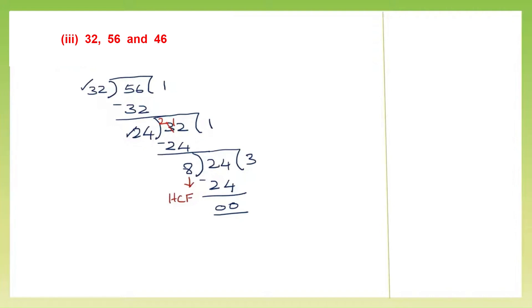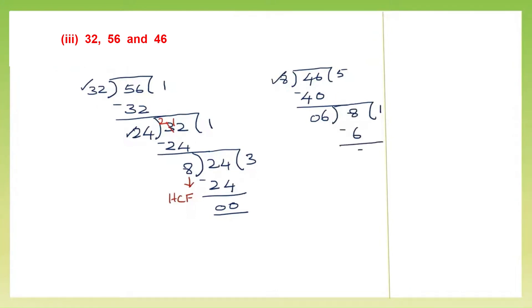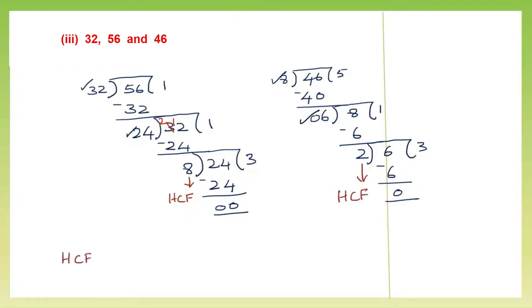Now I'm going to use 8 and 46. Let's put 46 inside and 8 outside. 8 fives are 40, minus; when I subtract, I get 6. Now I'm going to keep 6 outside as my next divisor and bring 8 inside. 6 ones are 6, minus; I've got 2. I continue my division; 2 is my divisor and I take 6 and put it in. 2 threes are 6, minus; I've got the remainder 0. So the HCF of 32, 56 and 46 is 2. So that is our answer.